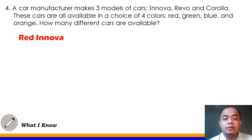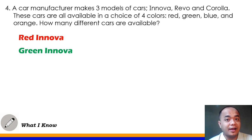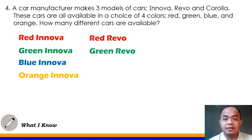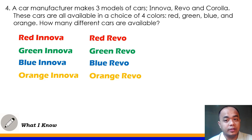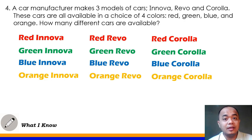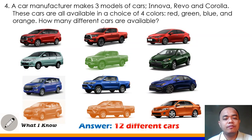Possible listings: red Inova, green Inova, blue Inova, orange Inova; red Revo, green Revo, blue Revo, orange Revo; red Corolla, green Corolla, blue Corolla, and orange Corolla. How many different cars are available? We have 12 different cars available. Ito yung final answer natin for number four.